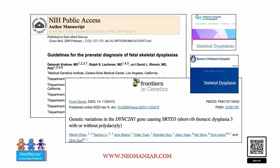Here are the references. If you have time, pull them up. One is from CHOP and one is from Boston Children's — both websites discuss skeletal dysplasia. One article covers the different tests you can do, and the other discusses a specific disorder: short rib thoracic dysplasia 3. Take a look, and I hope you have a wonderful day. Bye.